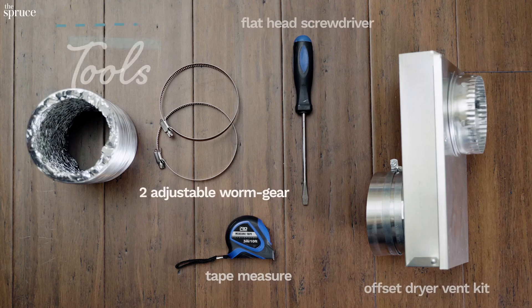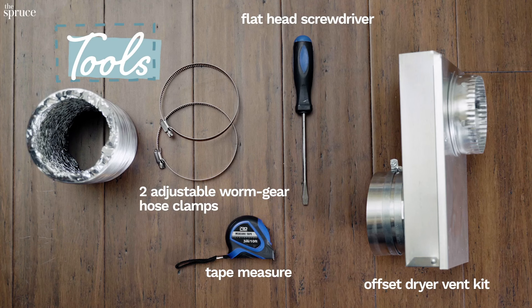If your dryer vent doesn't line up with your wall vent, you might be tempted to grab one of these accordion style hoses to fix the problem. But instead, I urge you to reconsider getting one of these.